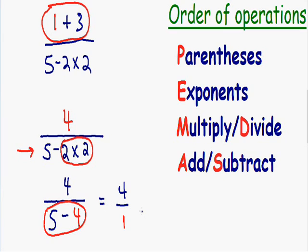So we have a one in the bottom of the fraction and a four in the top. Four over one is equal to four. So the really large complicated expression that we started with can be simplified to four using our order of operations. I hope this gave you a better idea on how to use the order of operations. I'm going to be making many more videos so stay tuned, and I will see you in my next one.